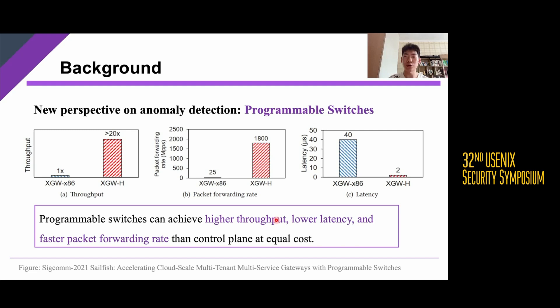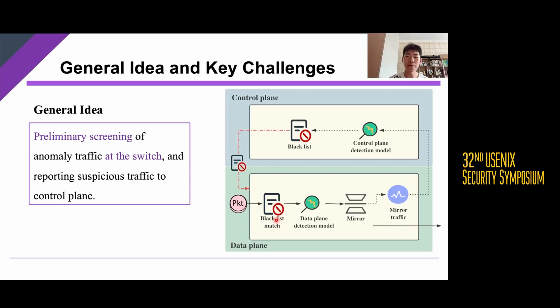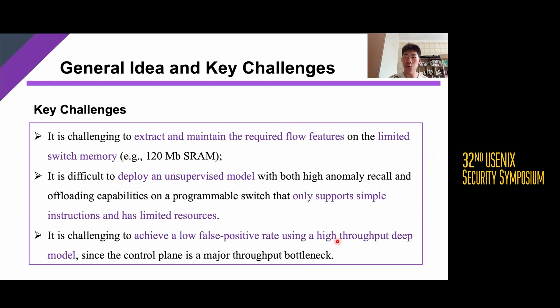So how do we take advantage of programmable switches for anomaly detection? Our general idea is as follows: preliminary anomaly detection of high-speed incoming traffic is performed on the data plane, and any suspicious traffic is reported to the control plane. The control plane then further investigates the reported traffic using a more powerful anomaly detection model and adds confirmed anomalous traffic to the blacklist. After this, the data plane can use the blacklist to block or limit the speed of anomalous flows. To realize this idea, we still confront three key challenges. The first is to extract and maintain the required flow features on limited switch memory. The second is to deploy an unsupervised model on a programmable switch that can only support simple instructions and has limited resources. The third is to achieve a low false positive rate while using a high-throughput data plane model, since the control plane is the major throughput bottleneck.